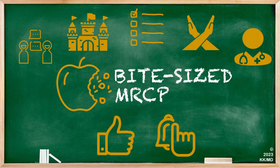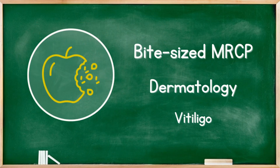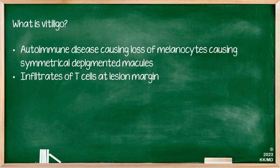Now without further ado, let's get into today's topic which is on vitiligo under the section of dermatology. Vitiligo is an autoimmune disease causing loss of melanocytes, which results in symmetrical depigmentation of the macules, as a result of infiltration of T-cells at the lesion margins.